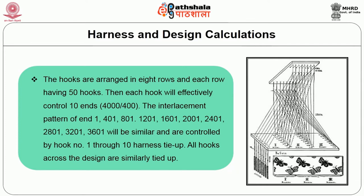The interlacement pattern of ends follows: the 1st end, 401st end, 801st end, 1201st end, 1601st end, 2001st end, 2401st end, 2801st end, 3201st end, and 3601st end will all be similar. All ends numbered 1, 401, 801, 1201, 1601, 2001, 2401, 2801, 3201, and 3601 will be connected to hook number 1. Each hook would therefore have 10 harnesses tied up in this order. All hooks across the design are similarly tied up, as depicted in figure 3.2.